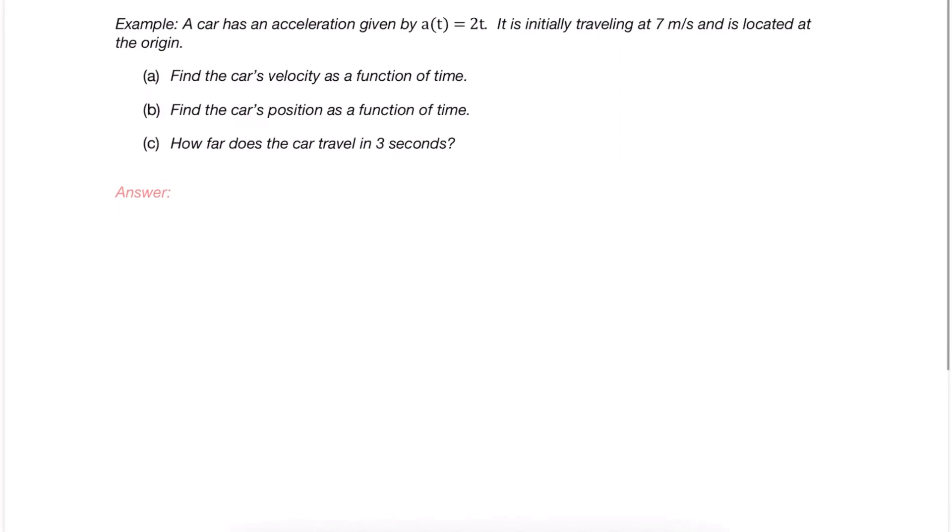This next example is going to take a different look. In this example what we're being given is the acceleration, and we're going to have to use that to find the velocity and position. Since acceleration is the derivative of velocity, that means velocity is the anti-derivative of acceleration. So in part A, to find the car's velocity, we need to take the anti-derivative of the acceleration function that we're given. We write it out, and we're taking it with respect to time.